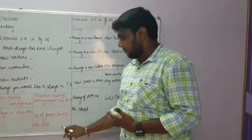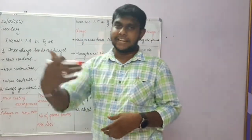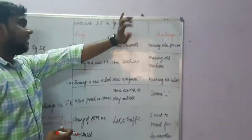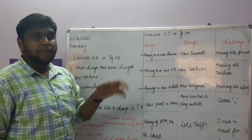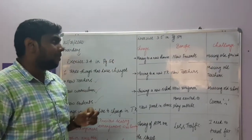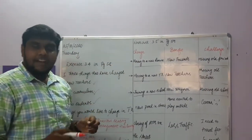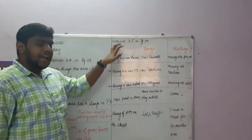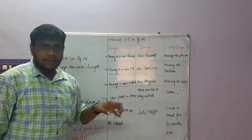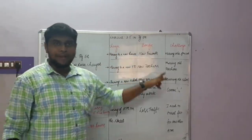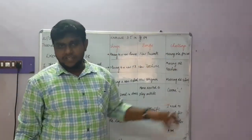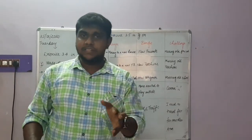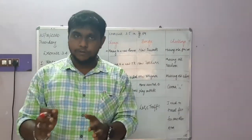This is the second change and the reason why I go for a second timetable. Moving on to the next exercise, which is 3.5 on page number 59 in your social studies studio volume 1. Here they have mentioned a tabular column with three columns: change, benefit, and challenge. They have listed some changes.